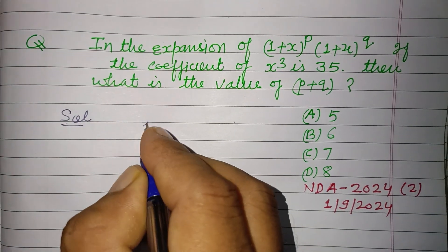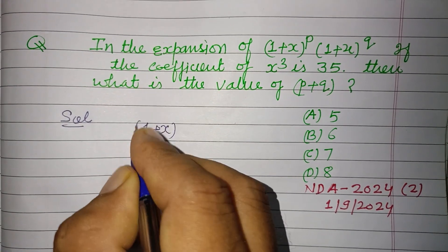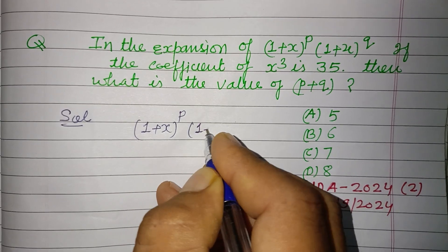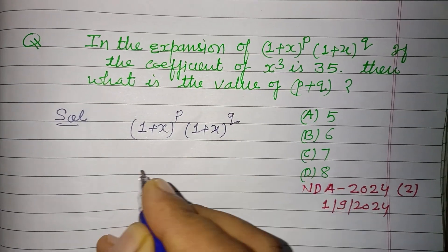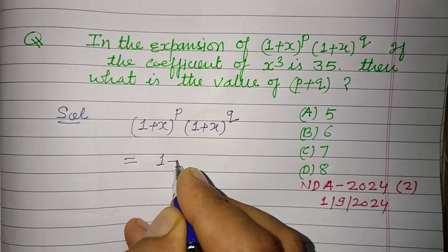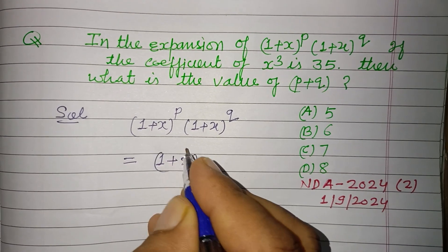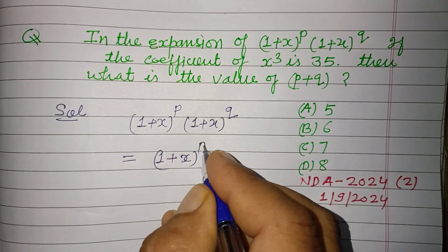So students, here given that (1+x) to the power p times (1+x) to the power q, we can write it as (1+x) to the power (p+q), because the base is the same so we add the powers.